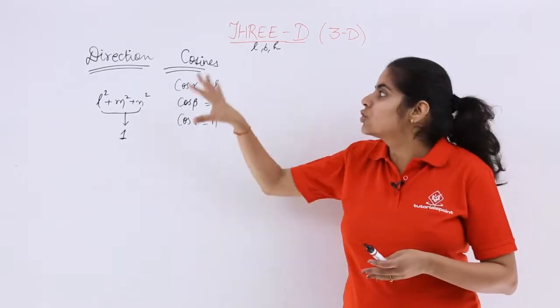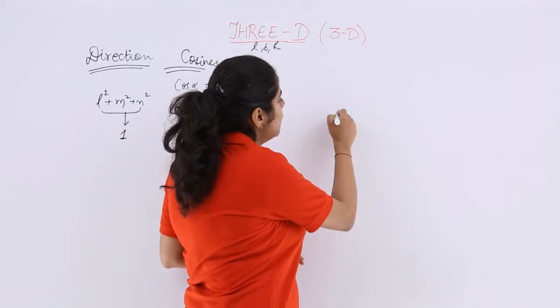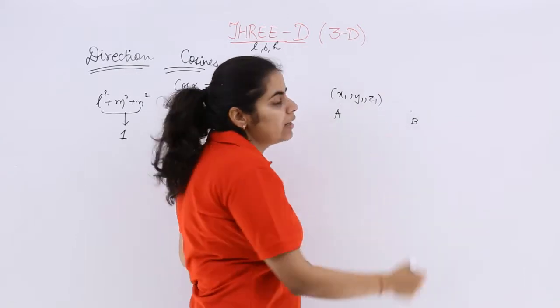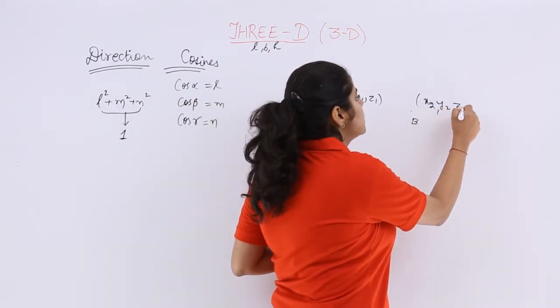Now if I talk about direction cosines in the term of a line. So again I have a line which has two points somewhere on it. The first has the coordinate of x1, y1, z1. The second has the coordinate of x2, y2, z2.